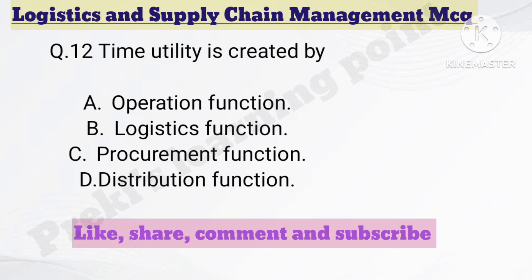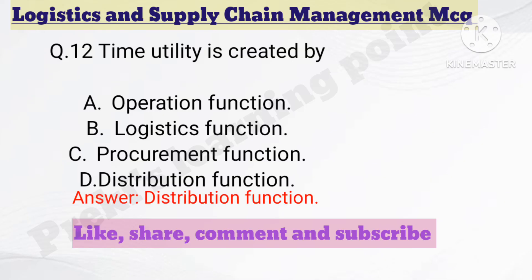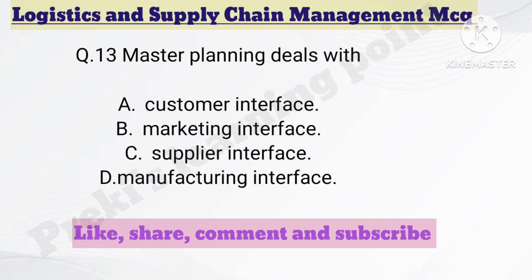Question number 12. Time utility is created by — Option A: Operation function. Option B: Logistic function. Option C: Procurement function. Option D: Distribution function. The correct answer is option D — distribution function.